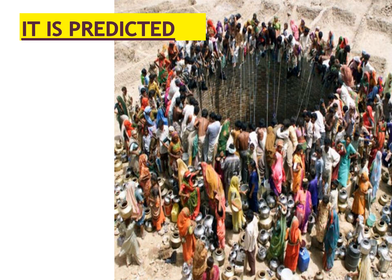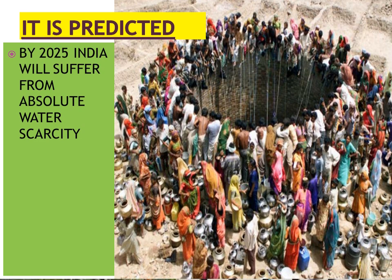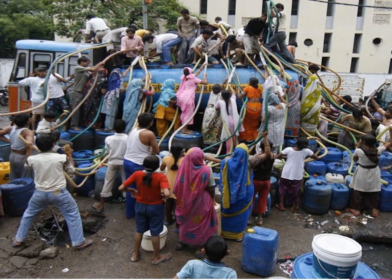Do you know that it has been predicted that by 2025, India will face a very serious shortage of water? As you can see, there is a tanker with so many pipes attached to it — this problem can be seen in many places in India where there is an acute shortage of water.